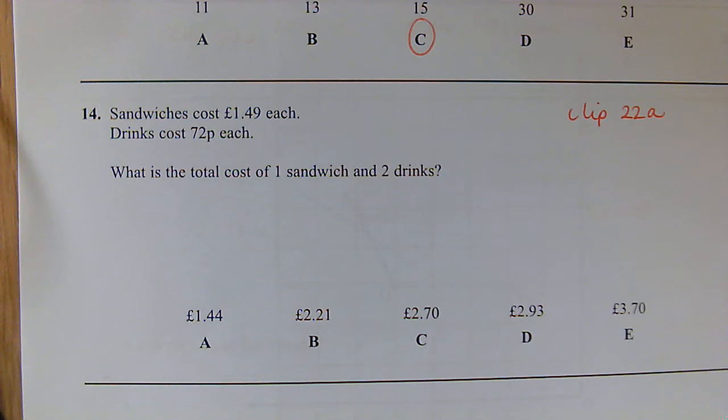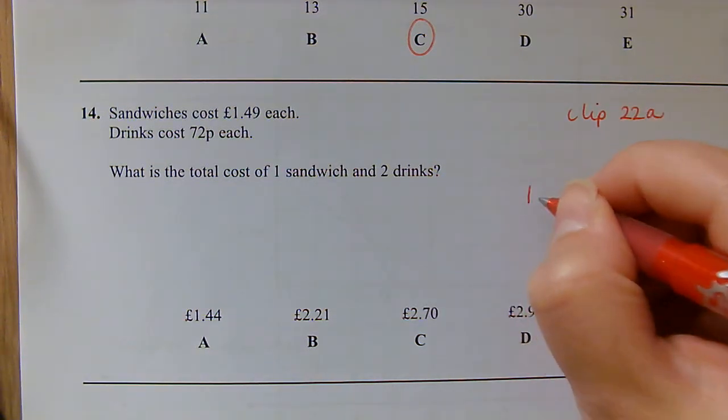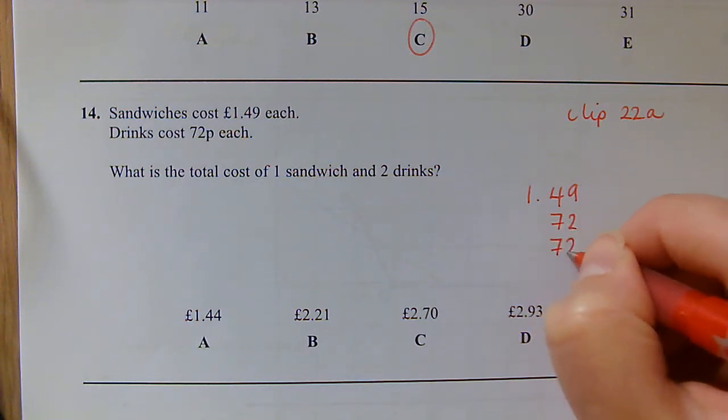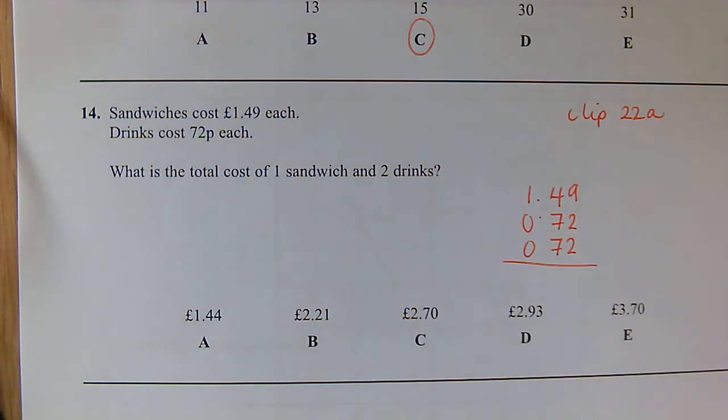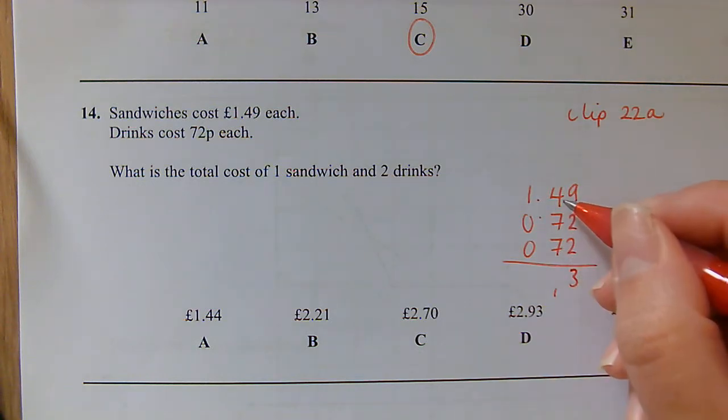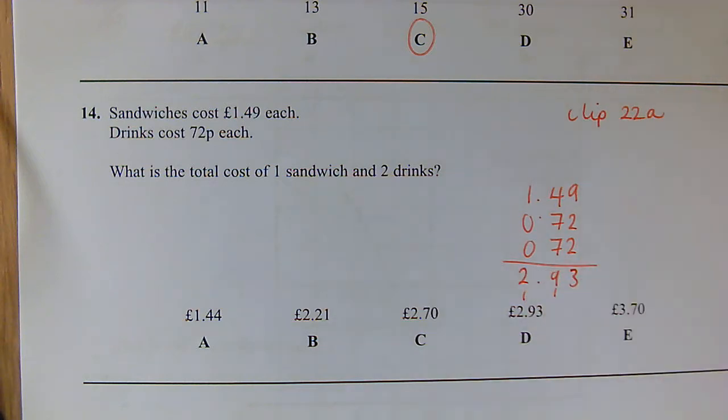Question 14: Money question now. We've got sandwiches costing £1.49, drinks cost 72 pence each. What's the cost of one sandwich and two drinks? So 149 add 72 add 72. So we've got 11, 13, 14, 18, 19, and we end up with £2.93, which is D.